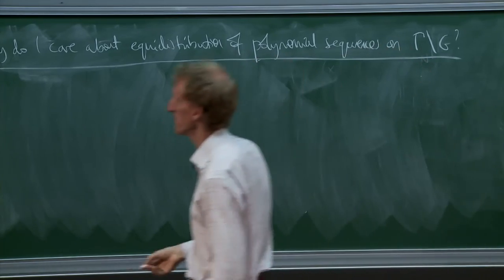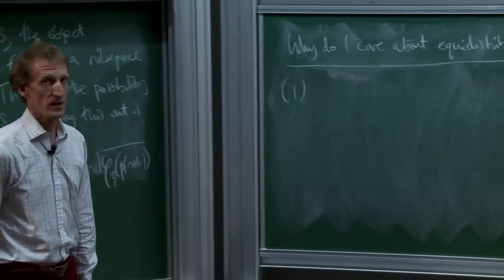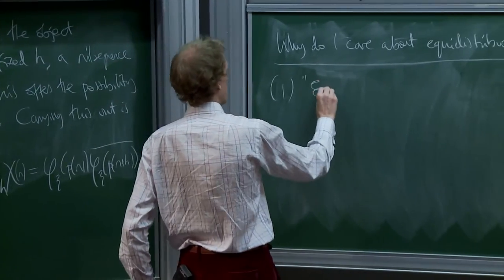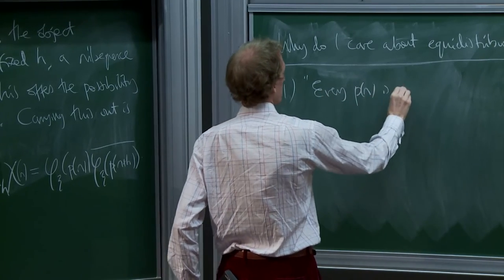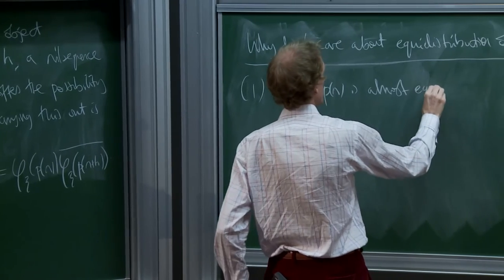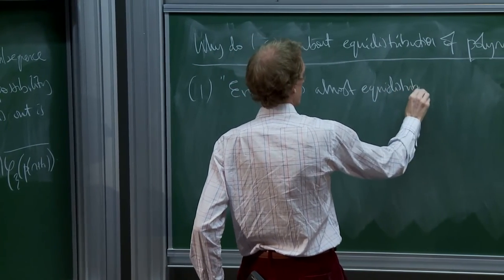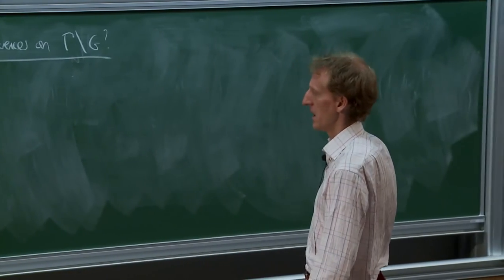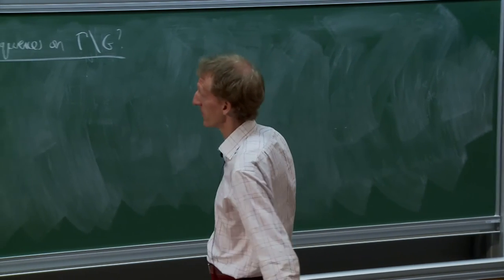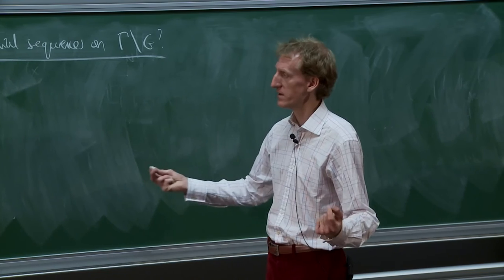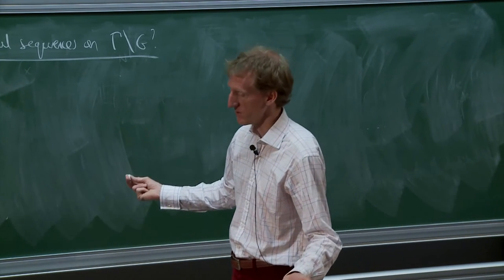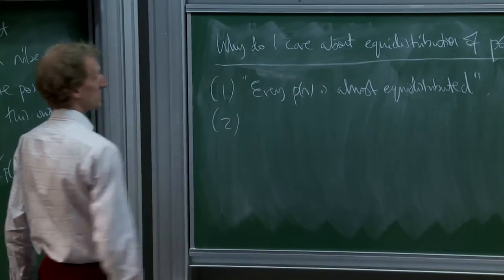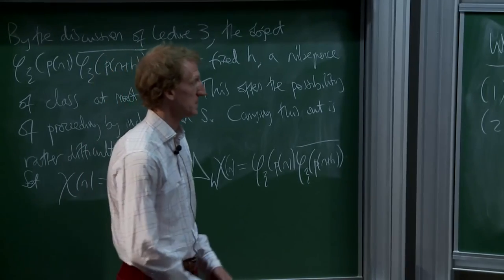There are two reasons. First, essentially every sequence is equidistributed — every P(n) is almost equidistributed. This means an arbitrary polynomial sequence can be decomposed into some very benign pieces: a periodic piece and a very smooth piece, plus an equidistributed piece. Somehow the equidistributed case is pretty general.